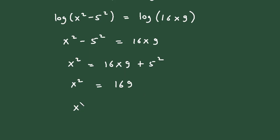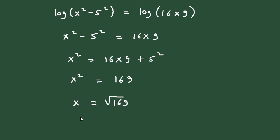So we have to find x, so x is equal to under root of 169. Here also this will be plus minus under root of 169, so therefore x is equal to ±13. So plus minus 13 is the final answer.